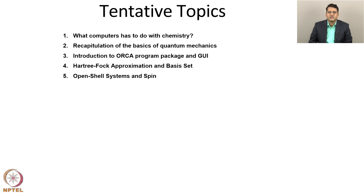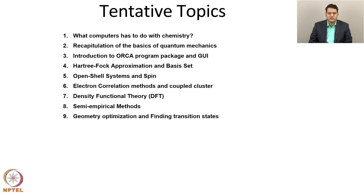We are going to learn about open shell systems and spin. What is missing in Hartree-Fock is electron correlation, and we are going to learn about electron correlation methods, and especially coupled cluster, which is considered the gold standard of quantum chemistry. Of course, the most popular option is density functional theory, which is more popularly used. We are going to learn about density functional theory and the various functionals which are available.